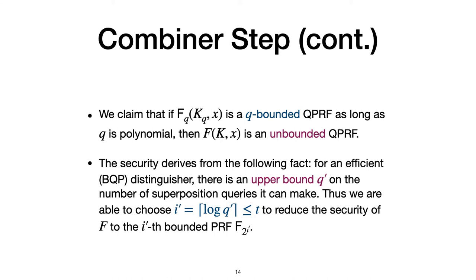The security derives from the following fact. For an efficient BQP distinguisher, there is an upper bound Q' on the number of superposition queries it can make. Here, upper bound Q' which can only be polynomially large. Thus, we are able to choose I' equals to log of Q' to reduce the security of f to the I' and F' is bounded PRF up to 2 to I'.